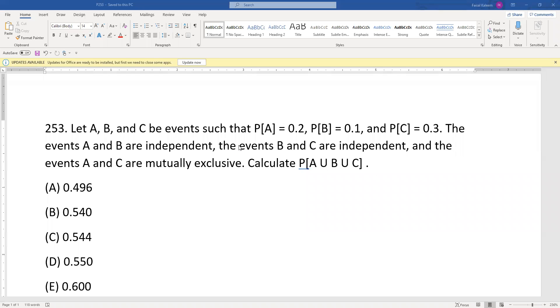Let A, B, and C be events such that P(A) equals 0.2, P(B) equals 0.1, and P(C) equals 0.3. The events A and B are independent, the events B and C are independent, and the events A and C are mutually exclusive. Calculate P(A union B union C).